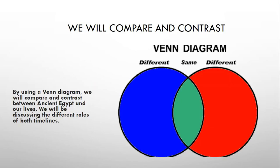Using a Venn diagram, this is going to be very important for us because we're going to be comparing ancient Egypt with our own lives. So here we're going to be connecting this ancient civilization to the roles we have in our lives.